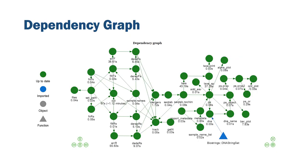This dependency graph visualization is one of the features of the DRAKE package. Here we see how all the steps are related to each other and what has been built and is up to date. Everything here is green, meaning everything has been built and is current. When something fails, we will see dots in red, giving us the opportunity to troubleshoot and fix the code. The workflow can then be resumed from the point we left off, avoiding recomputing steps that have already been built.